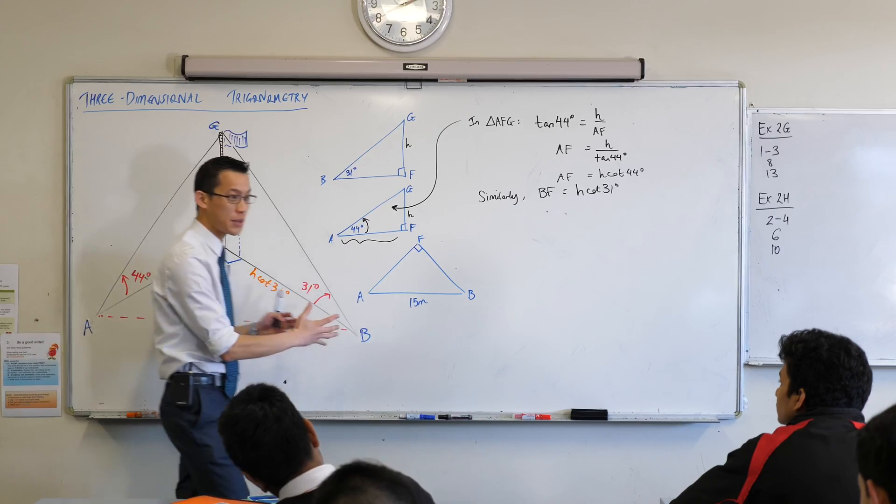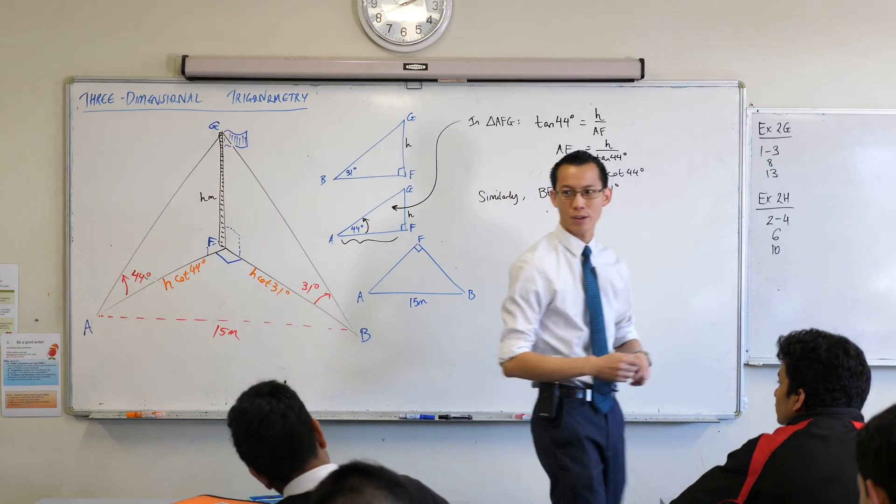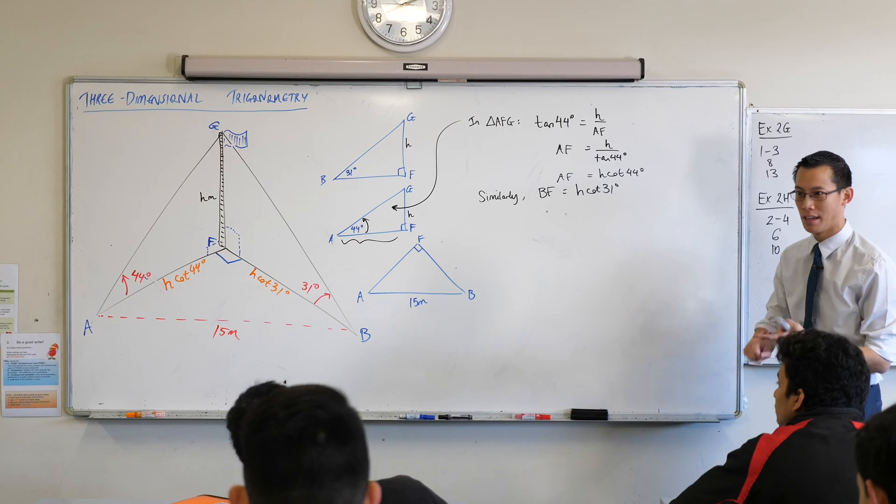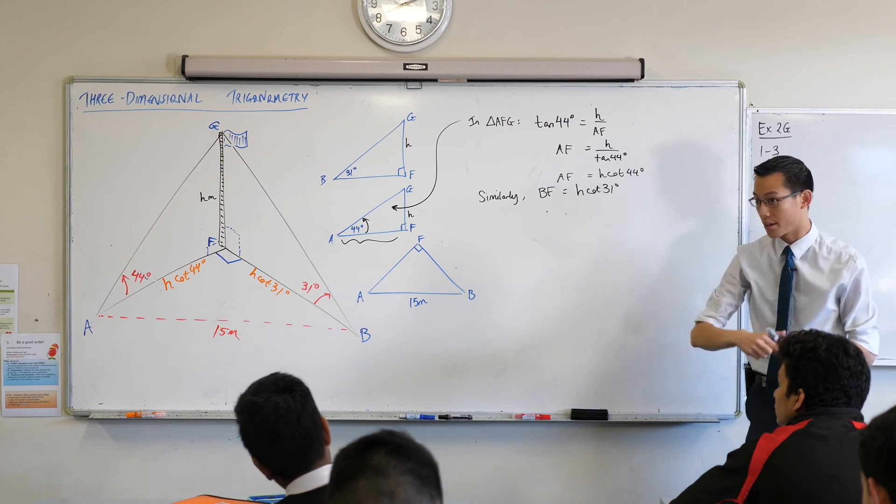It's right-angled. I have all three sides. What piece of knowledge should I call on? Right-angled triangle, thinking of lengths. This is Pythagoras, right?